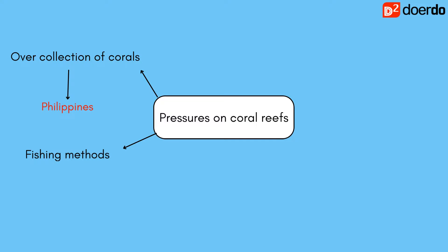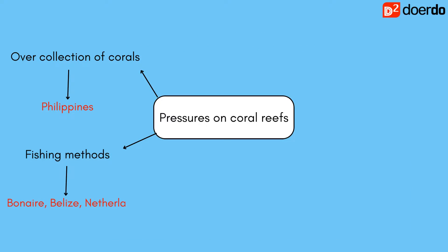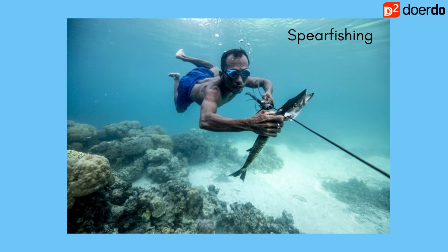Secondly, the fishing methods adopted by people are often destructive. The use of dynamite and cyanide to stun fish in the Philippines and Indonesia can destroy coral reef habitats. In Bonaire, Belize, and the Netherlands, spearfishing is used, which can reduce specific fish populations and disrupt the food chain.